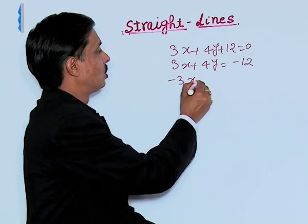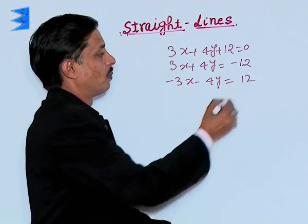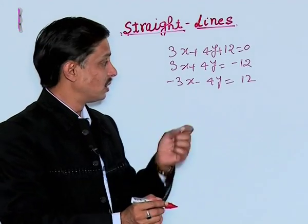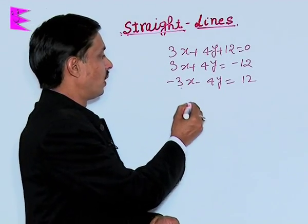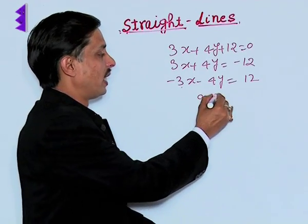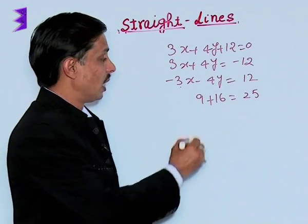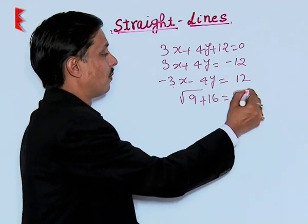So this becomes minus 3x minus 4y equals positive 12. Then take the square of the coefficient of x, this is 9, coefficient of y, that is 16, which becomes 25, and its square root becomes 5.